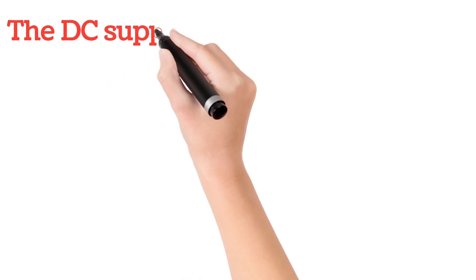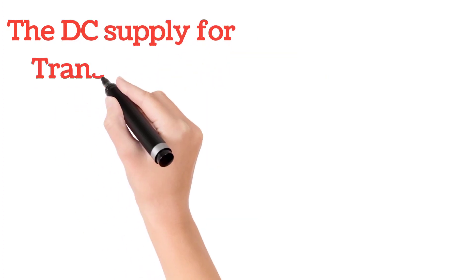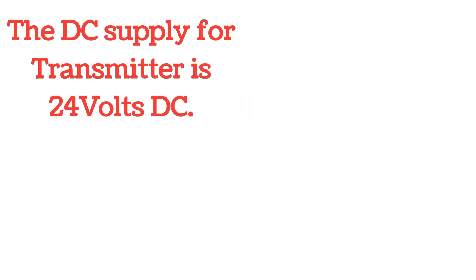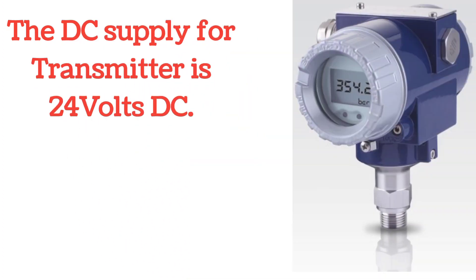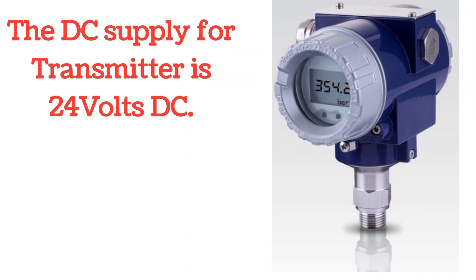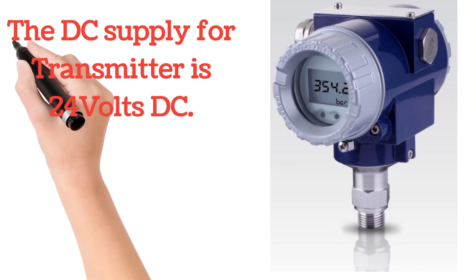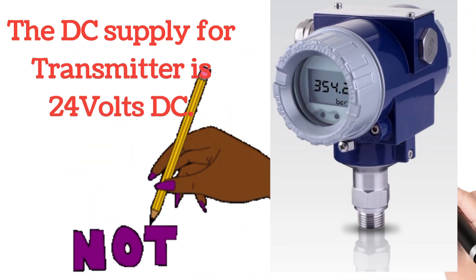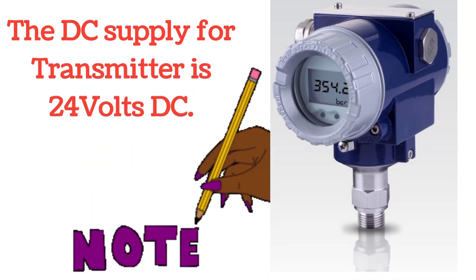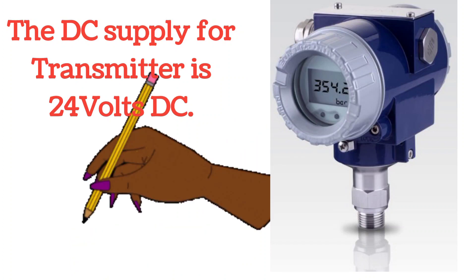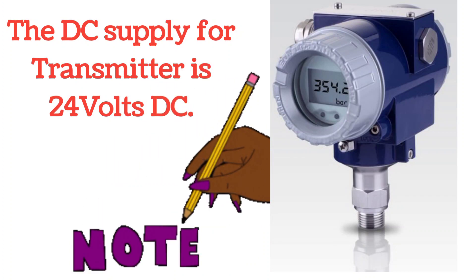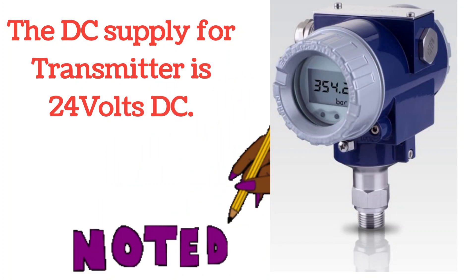The supply for the transmitter is 24 volts DC supply — note it down or take a screenshot. AC supply is not given to the transmitter. This is very important for interviews.